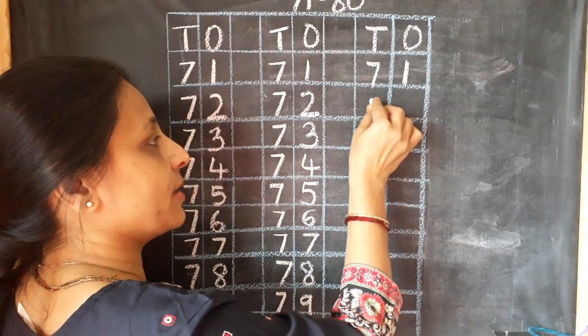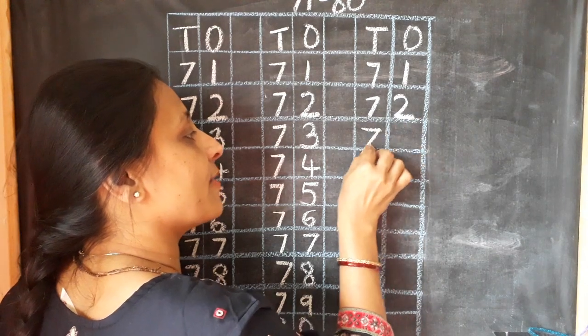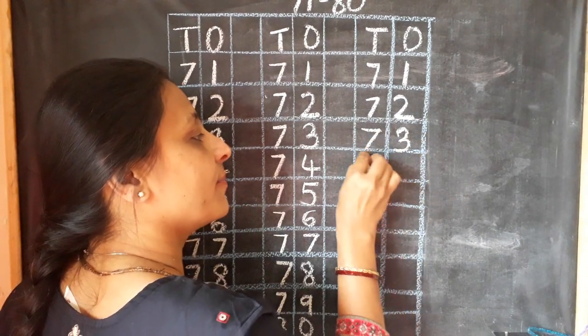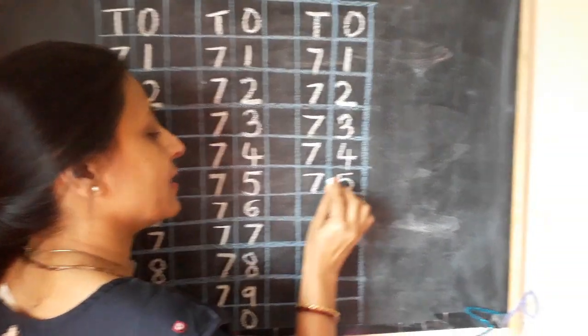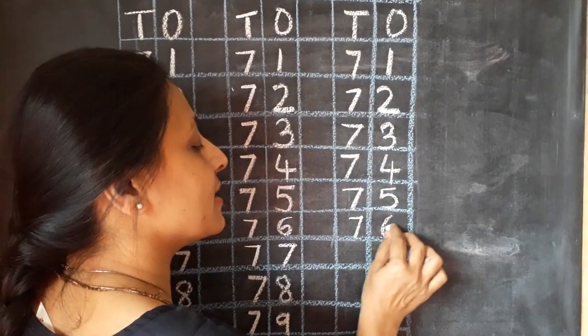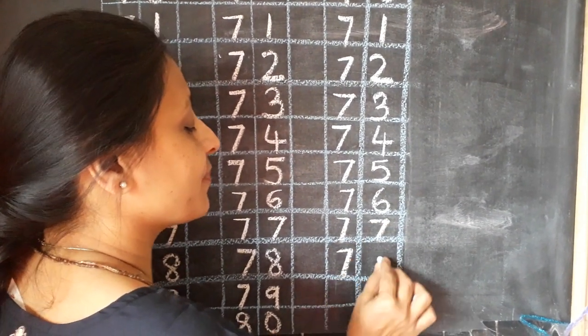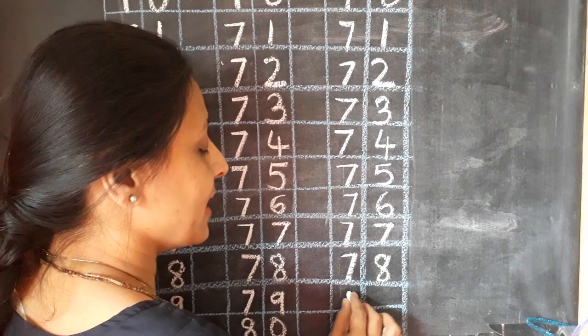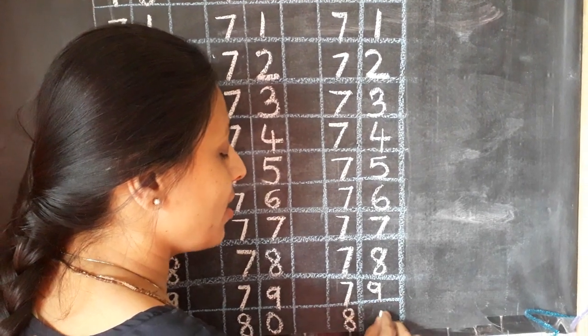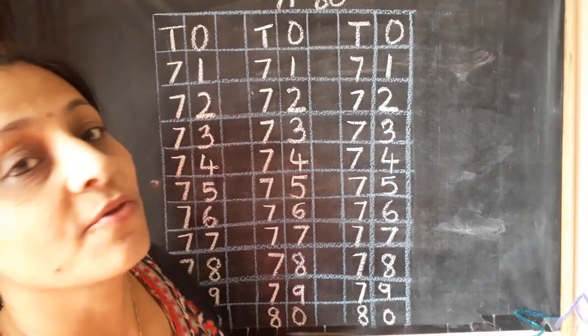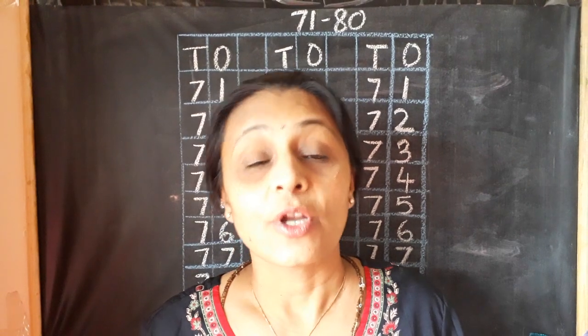Children, now you have to say with me. Okay, 72, 73, 74, 75, 76, 77, 78, 79. And 80.